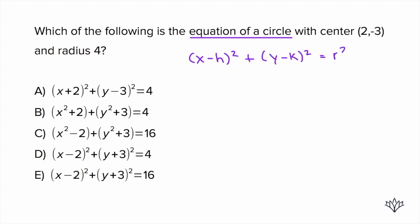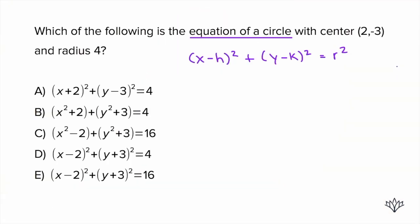Let's talk about what each of these variables represents. Take a look at your center: (2, -3). Your x-coordinate, 2, is always your h. Your y-coordinate, -3, is always your k. And then your radius is your r, which is, in this case, 4. Now let's plug in those values.